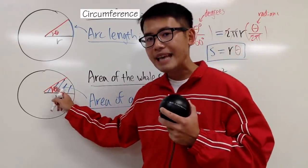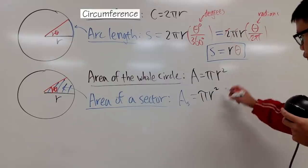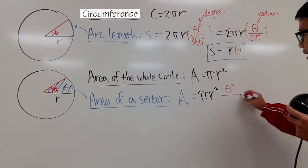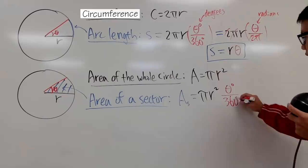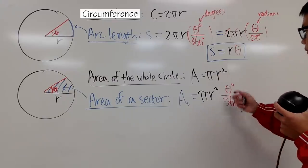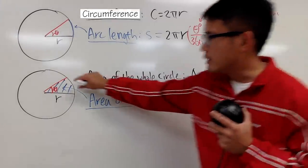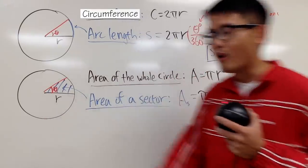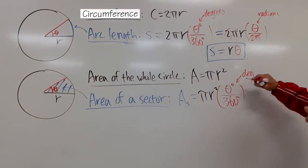And then, I will look at how big this angle is. If you use degrees, that's okay. Just put down θ degrees, and then divide it by 360 degrees. So, this is how you can figure out what portion is this compared to the whole circle. So, this is for degrees.